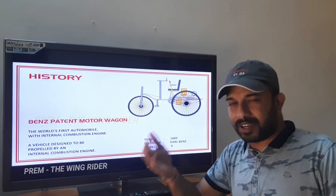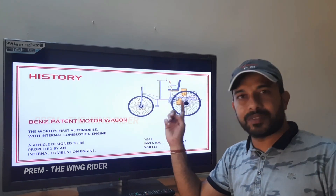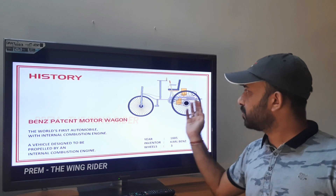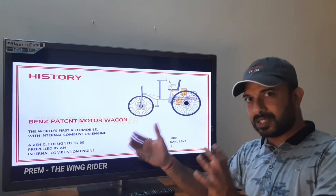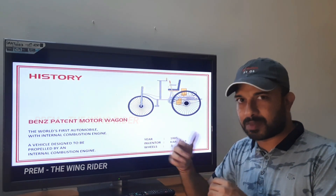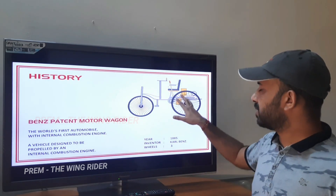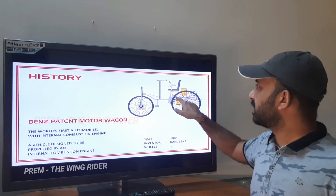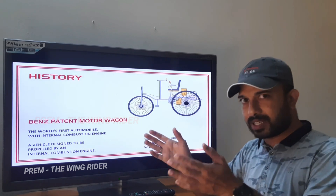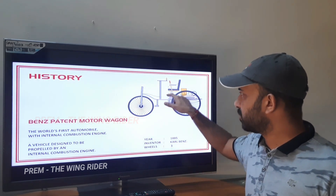In 1885, Karl Benz invented the Benz Patent Motor Wagon — a three-wheeled vehicle with the engine mounted on it. It has a valve and a drive system. There is a brake lever for control — left and right steering. The steering mechanism would finally move the axle.